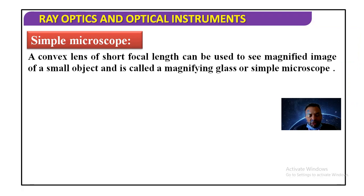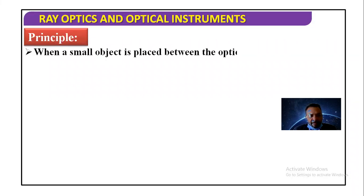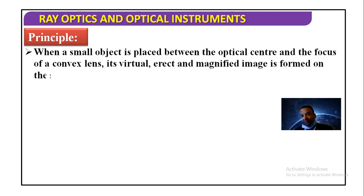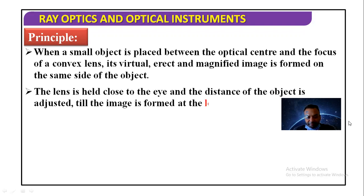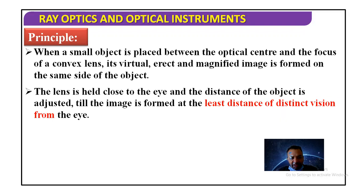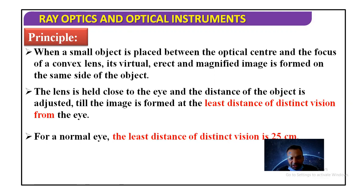Here only one lens is used and that lens has a very small focal length. Now, what is the principle? When a small object is placed between the optical center and the focus of a convex lens, its virtual, erect, and magnified image is formed on the same side of the object. The lens is held close to the eye, and the distance of the object is adjusted till the image is formed at the least distance of distinct vision, which is 25 cm for a normal eye.